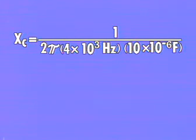the capacitive reactance is equal to 1 over 2 pi fc, or 1 divided by the quantity 6.28 times 4 times 10 to the third hertz times 10 times 10 to the minus sixth farads,